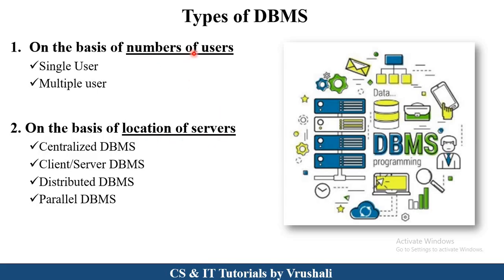Number of users divides DBMS into two types: either single user or multiple users use the database. Location of server divides it into four types of architecture: centralized architecture, client-server architecture, distributed architecture, and parallel architecture. In today's session, we will discuss centralized and client-server DBMS. In the next session, we will discuss distributed and parallel DBMS.